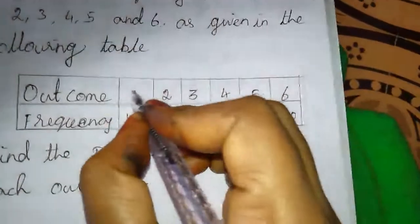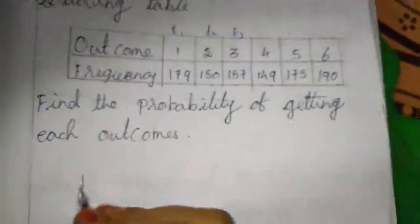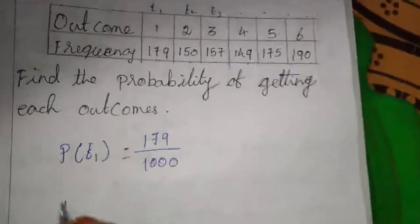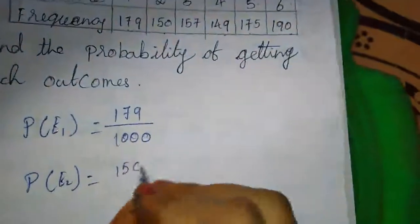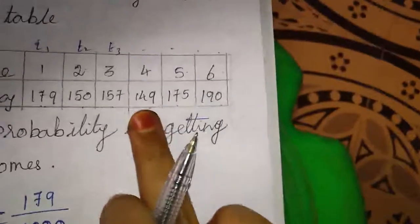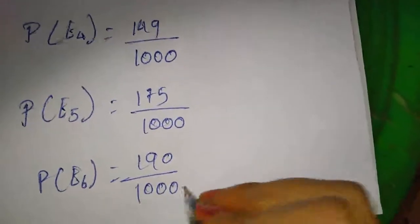Here also we are finding for every outcome, so we take 1 as E1, 2 as E2, E3, E4, E5, E6. P of E1 equals 179 divided by 1000. P of E2 equals 153 divided by 1000. P of E3 equals 157 divided by 1000. P of E4 equals 149 divided by 1000. P of E5 equals 175 divided by 1000. P of E6 equals 190 divided by 1000. This is the answer for this sum. Now we will move to the next example.